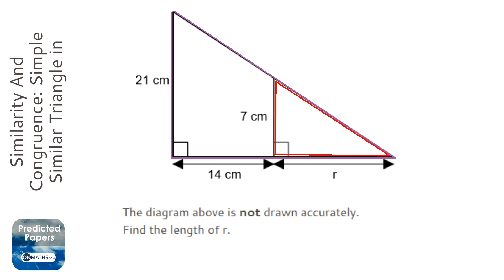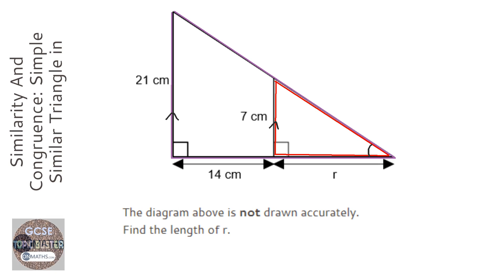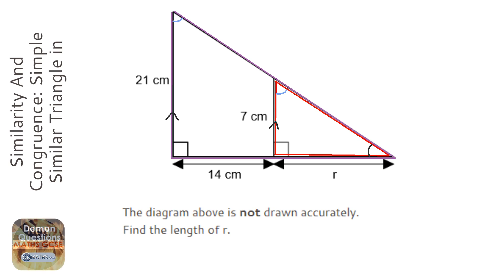If we look at the angles, this angle is shared between both triangles so it's going to be equal. The bottom left one is 90 degrees, and we know that these two lines are parallel. Because they're parallel, the top left angles are also equal due to corresponding angles — also known as F angles. So if you've got two triangles with exactly the same angles, one is an enlargement of the other, and therefore the two triangles are similar.